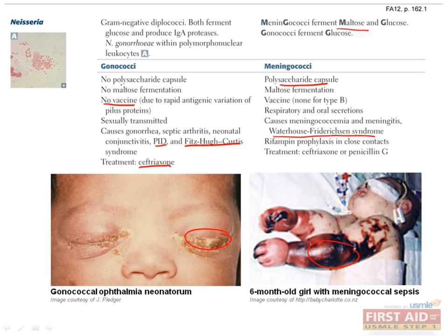Meningitis can be treated with a third-generation cephalosporin, such as ceftriaxone, and rifampin should be given as prophylaxis to close contacts of an infected individual. There is also a meningococcal vaccine, which is recommended for adolescents age 11 to 12. It covers four of the five most common serogroups: A, C, Y, and W135. Serogroup B is not sufficiently immunogenic to create a vaccine.